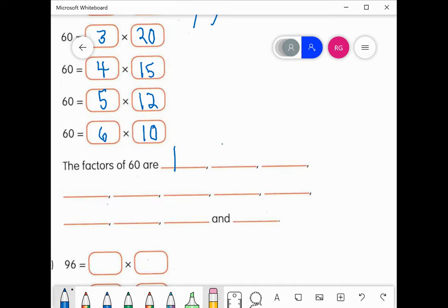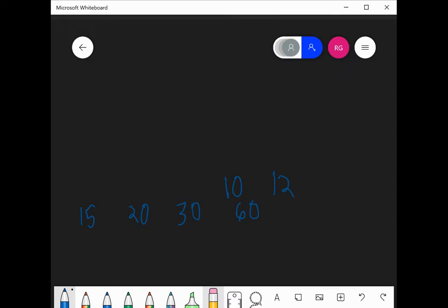So here we go. We have 1, 2, 3, 4, 5, 6, 10, 12, and then 15, 20, 30. And we're almost here, we have one more. We have 60, so 60 times 1. There we go, we got it.